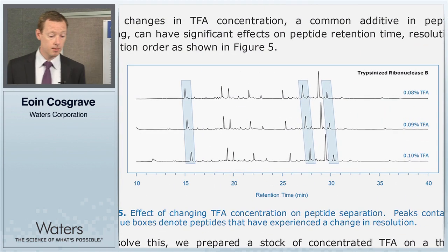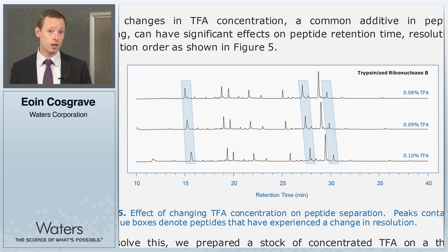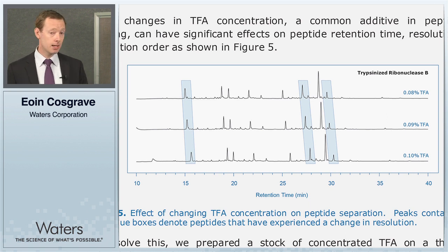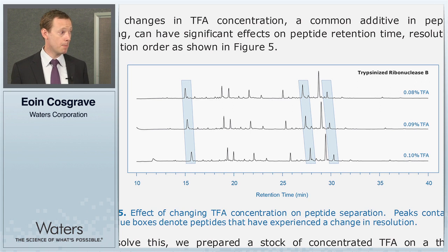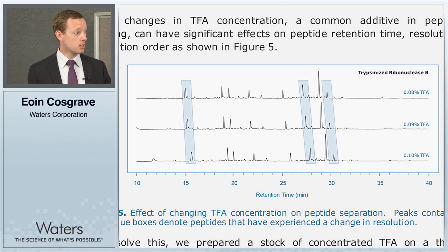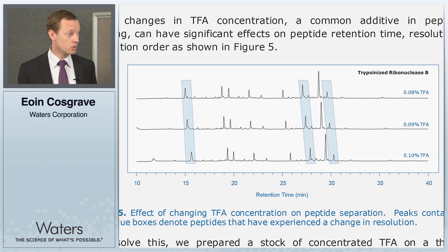To use more of the tools available on the H-class Bio, we decided to remove the acidic modifier from mobile phases A and B and instead include it on a third solvent line using AutoBlend Plus. The reason we use AutoBlend Plus for controlling the delivery of TFA is that slight adjustments in TFA concentration can have a large impact on chromatography — demonstrated in figure five, where adjusting TFA concentration by 0.01% increments shows that those subtle changes have a big impact on the resolution of those peaks.